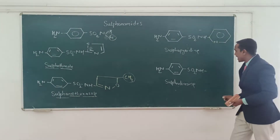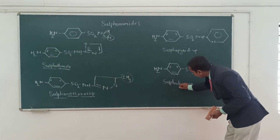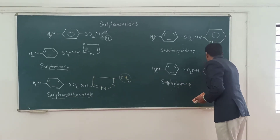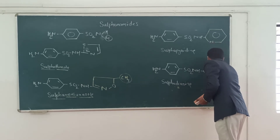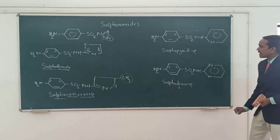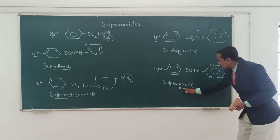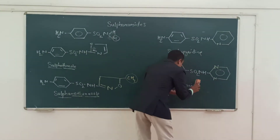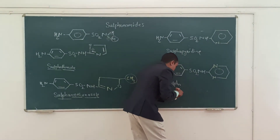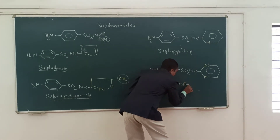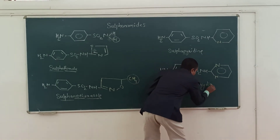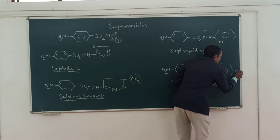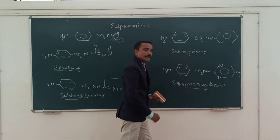Then we can convert this into sulfadiazine. Here 'di' is indicating the presence of two nitrogens. So it becomes sulfadiazine. Now if we are having sulfadiazine, we can get the next molecule, that is sulfamethoxy diazine. Here the addition is a methoxy group. So just you have to add a methoxy group at the fourth position, and it becomes sulfamethoxy diazine.